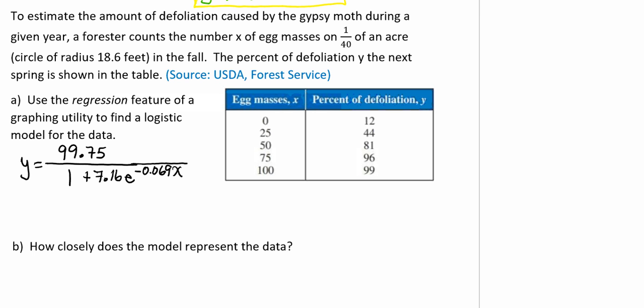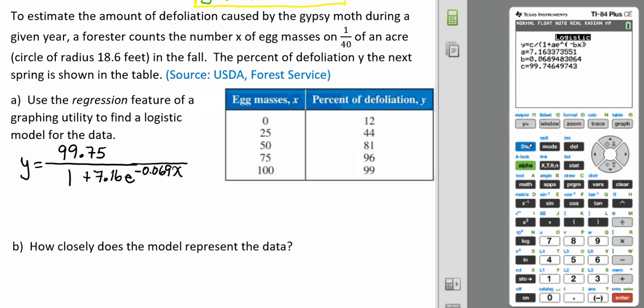Okay, so now we're going to graph this model in our stat plot. We're going to make sure that our stat plot is turned on and it says list one and list two. Then we're going to go into our Y equals and put in our equation. So we're going to set up our fraction: 99.75 over 1 plus 7.16 times E raised to the negative 0.069X.